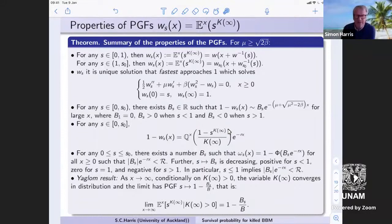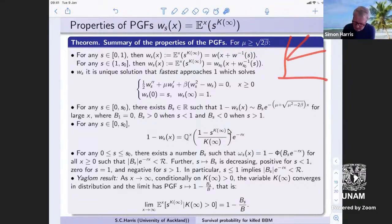Just to summarize, so this really is the last slide now, lucky you. So this is kind of a summary of everything that we've seen. So we've got our PGF for K infinity. We're only in the case where the mu is very big, so we're heading away from the origin. So if S is in [0,1], the PGF is just a shift of the w_X function.